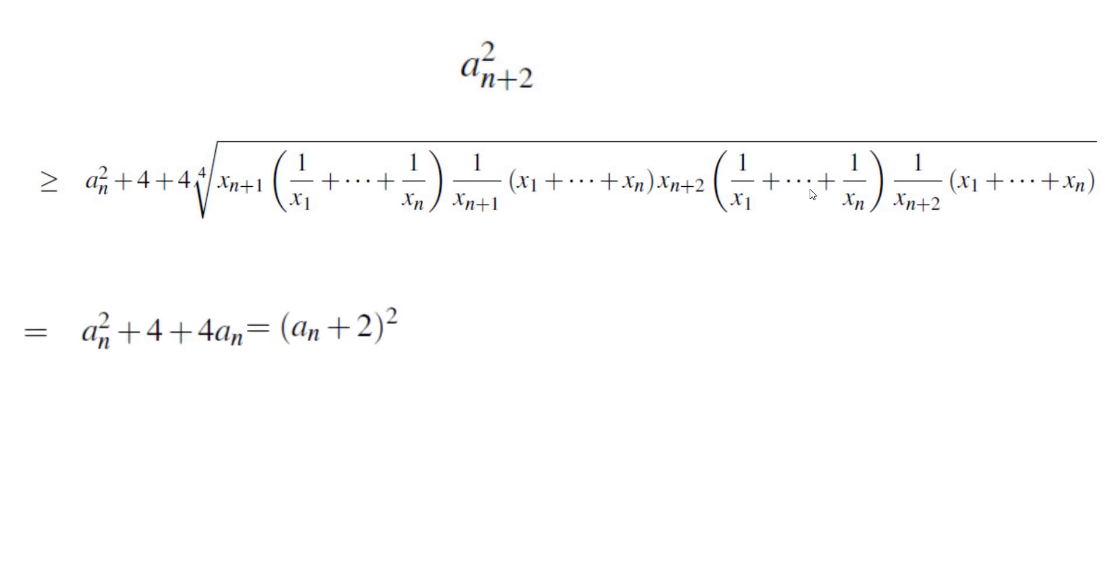So that means AN plus 2 squared is greater than or equal to AN plus 2 all squared. And we discussed that the equality cannot hold, which means AN plus 2 is at least AN plus 3. And we are almost there.